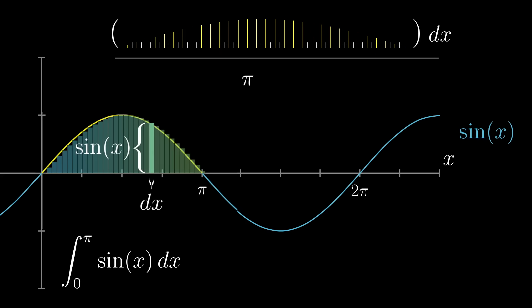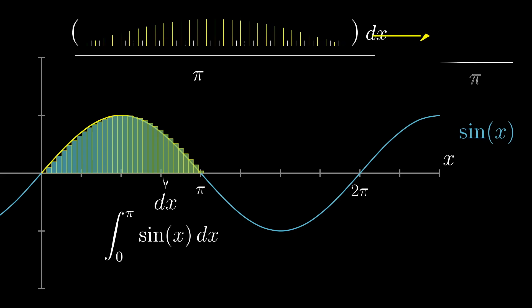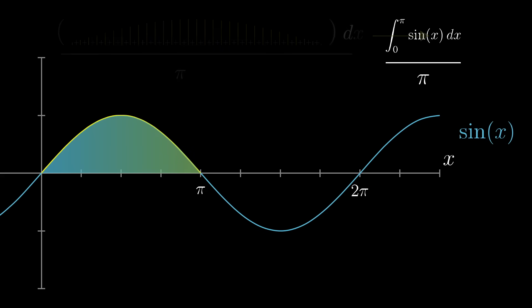But think about what it means to distribute that dx up top. It means that the terms you're adding up will look like sine of x times dx for the various inputs x that you're sampling. So that numerator looks exactly like an integral expression. And so for larger and larger samples of points, this average will approach the actual integral of sine of x between zero and pi, all divided by the length of that interval, pi.